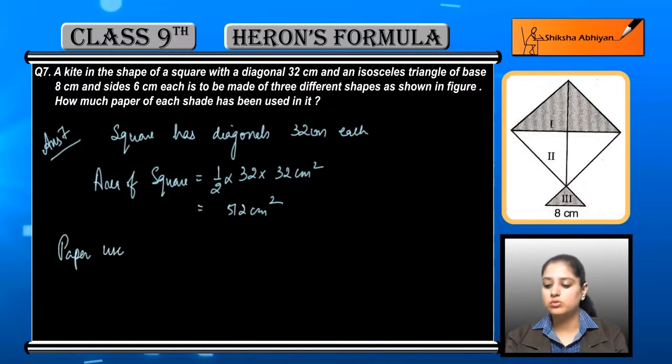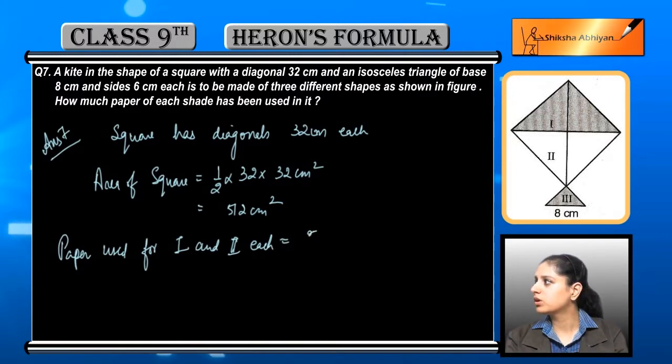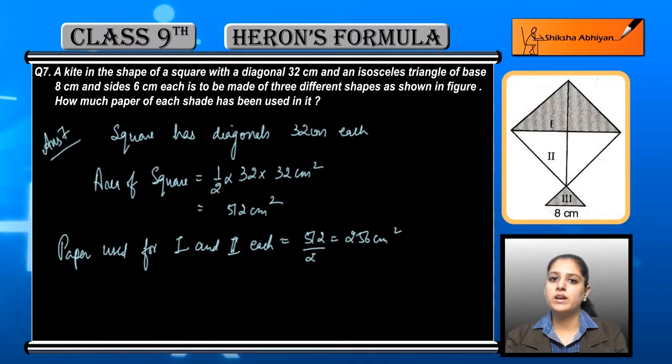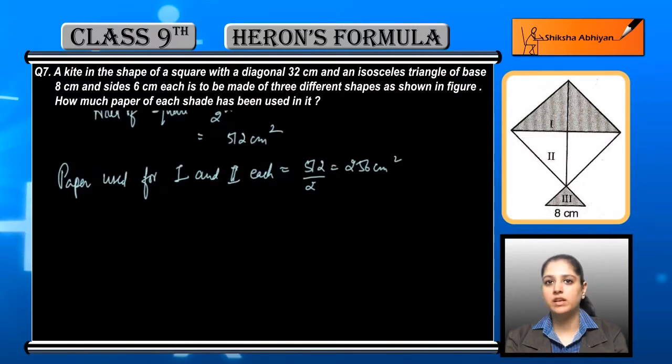Now if we can see in the question, the square is divided by 2 colors in the paper. So region 1 and region 2 is divided by square. So it is equal to half of the area of the complete square. 512 divided by 2 which is equal to 256 cm square. This is the first and second region area, 256 cm square each.